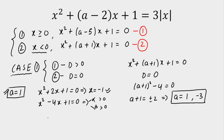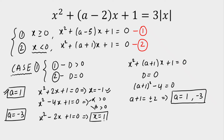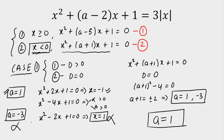Now let's check A equals minus 3. For A equals minus 3, the second equation gives X squared minus 2X plus 1 equals 0, which implies X equals 1. But we assumed X less than 0 for the second quadratic, and here we got a positive root. We want a negative root. So A equals minus 3 is clearly rejected in Case 1.